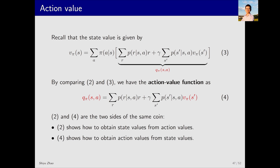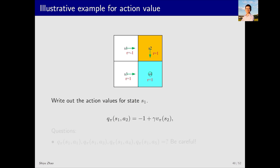The second and fourth equations are essentially two sides of the same coin. The second equation tells us that if we know the action values for all actions for a specific state, averaging these action values gives us the state value of that state. The fourth equation tells us that if we know the state values for all states, we can calculate all the action values. Let's demonstrate action value using an example.